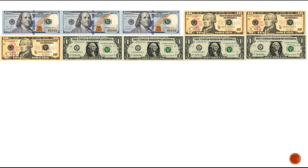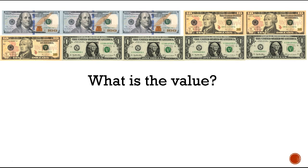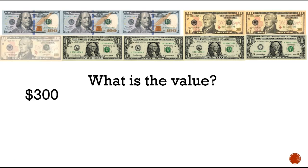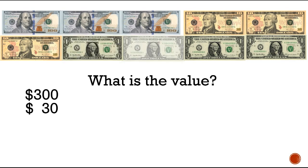Do this one on your own. Write down how many one-hundreds, how many tens, and how many ones we have. Push pause and then push play when you're done. All right, let's find out the value. First we count the one-hundreds: 1, 2, 3 — so you should have put three hundred. Then count the tens: 1, 2, 3 — which is thirty. Then count the ones: 1, 2, 3, 4 — four ones.